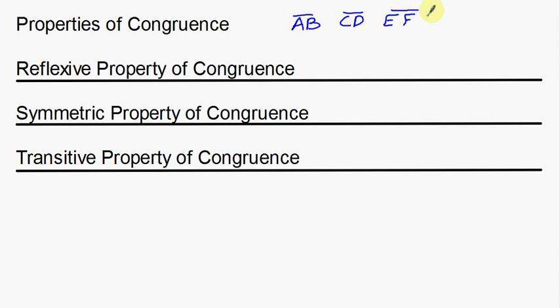The reflexive property of congruence looks like this: AB is congruent to itself, AB. The reflexive property is basically saying that a shape is going to be congruent to itself — the size and shape of that shape is going to be the same, which sounds a little redundant, but that's what the reflexive property is.